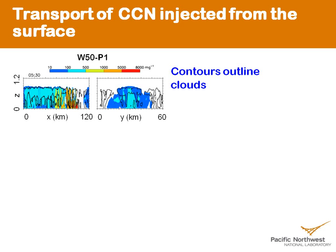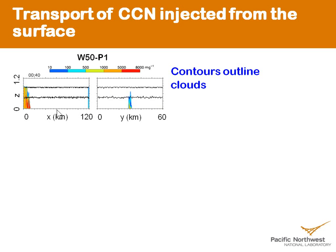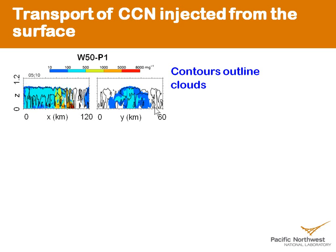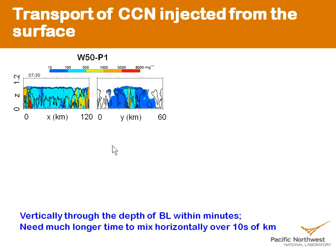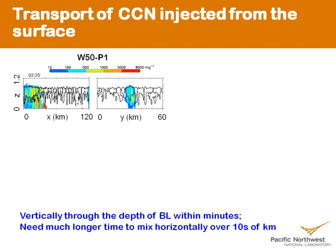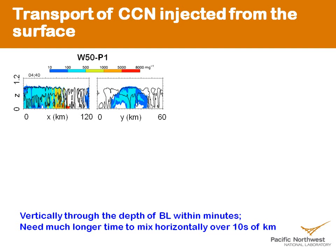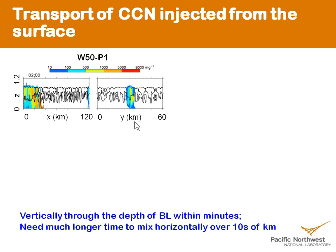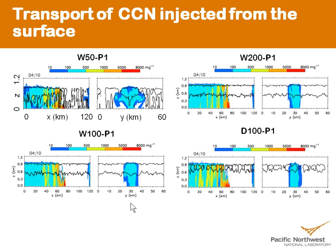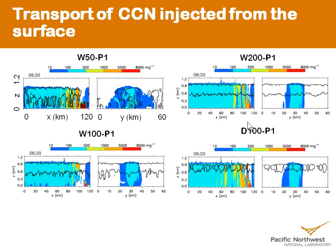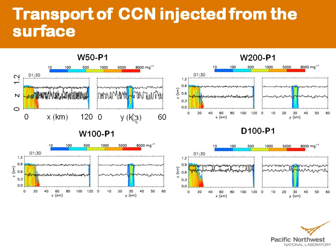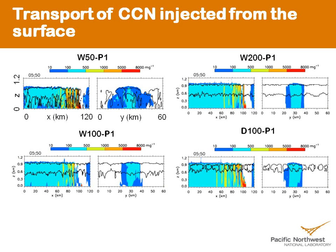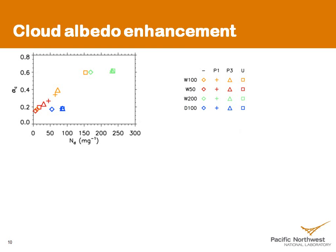Looking at how the injected CCN are transported in the boundary layer: on the left is a vertical cross-section along the ship plume and on the right is across the ship plume. Vertically, the injected CCN are mixed through the depth of the boundary layer within minutes. However, horizontally it needs much longer time to mix over tens of kilometers. Comparing with the other cases, the vertical mixing is very similar, but horizontally one case is more effective because of a mesoscale circulation induced by the suppression of precipitation.